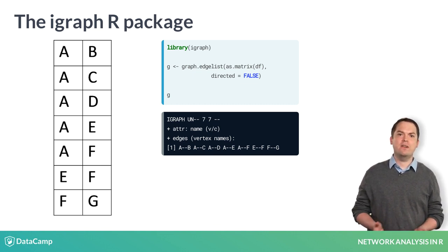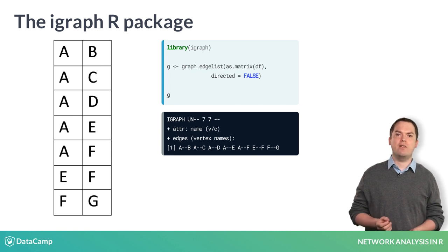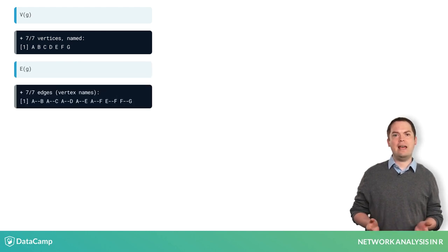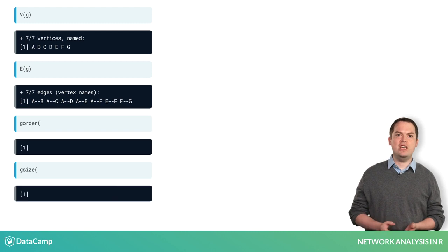It is possible to get lots of information directly from the iGraph object. The function V will return all vertices in a network. The function E returns all edges. To find the total number of vertices or edges in a network, you can also use the functions gorder and gsize respectively.